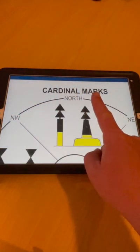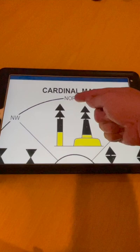This is a north cardinal. Two arrows pointing up, up is north. You must stay to the north of that marker.